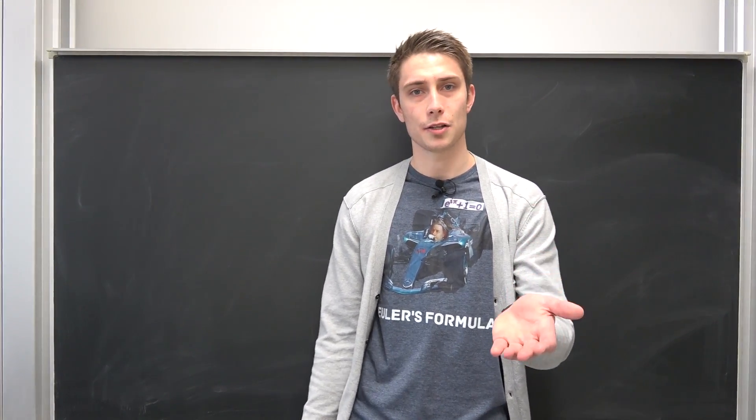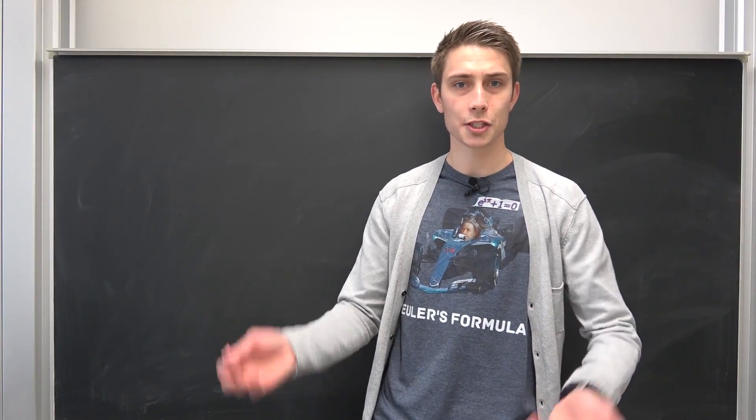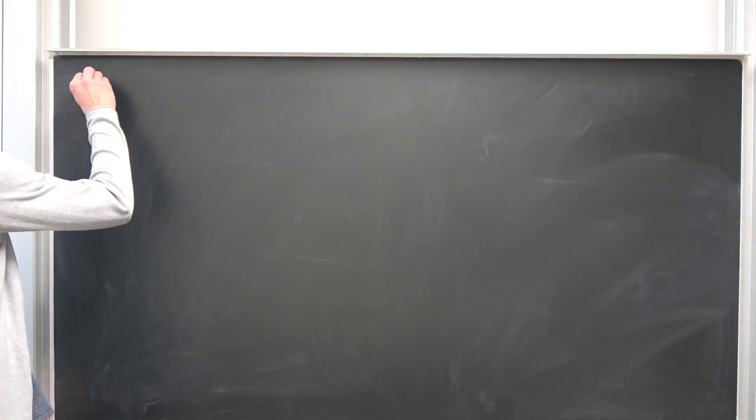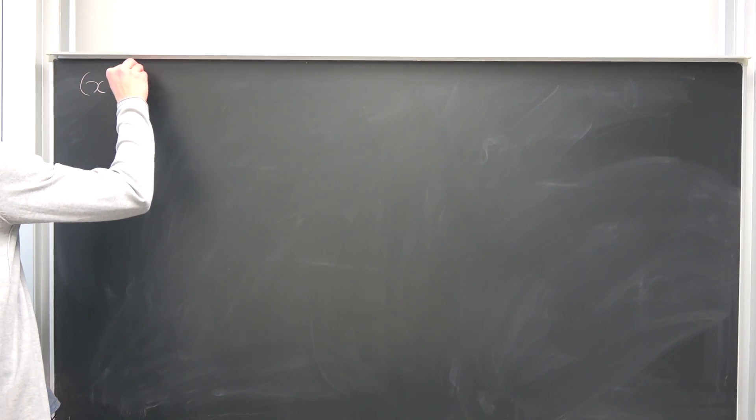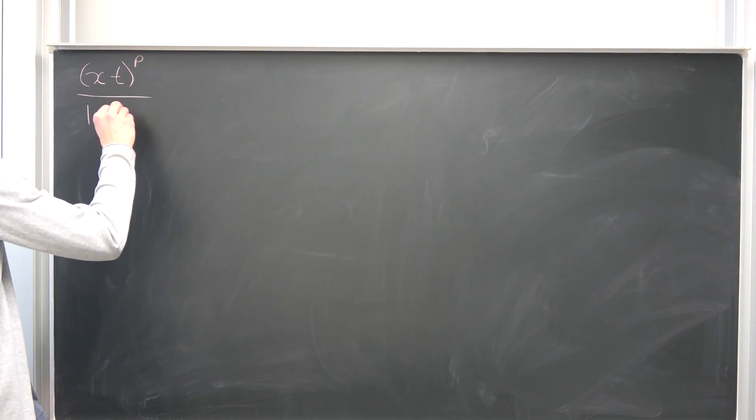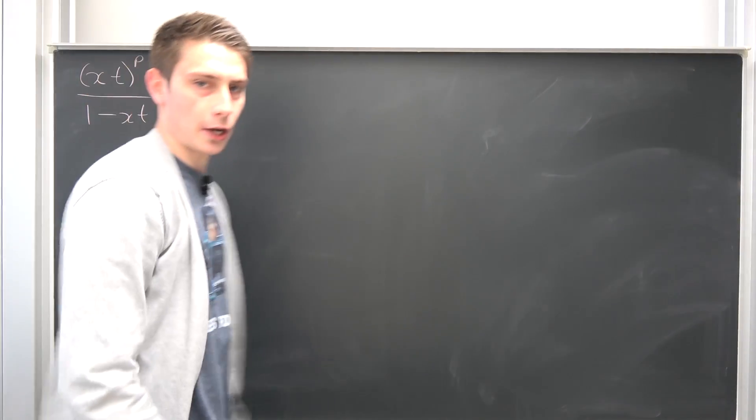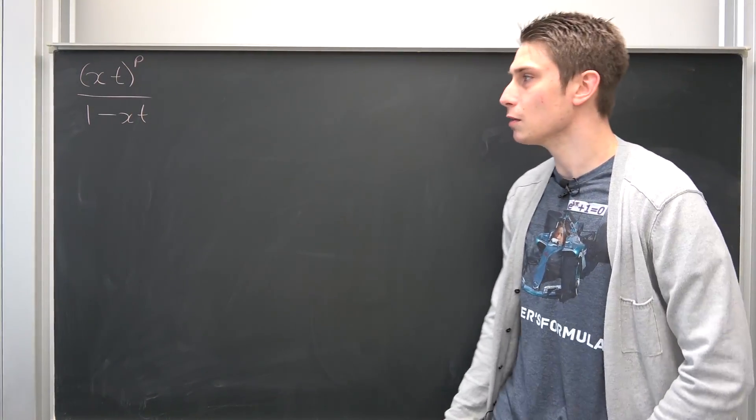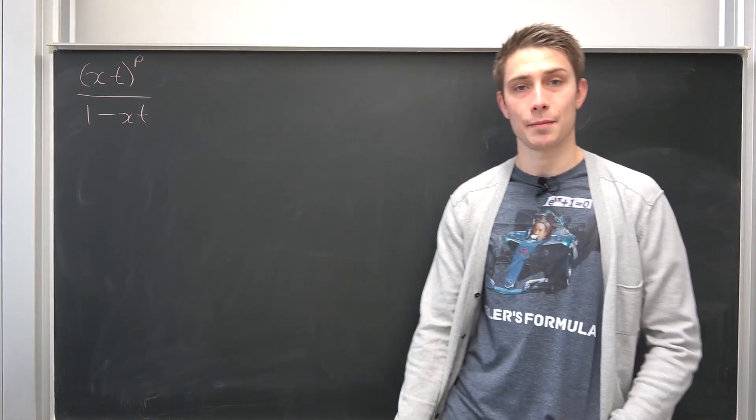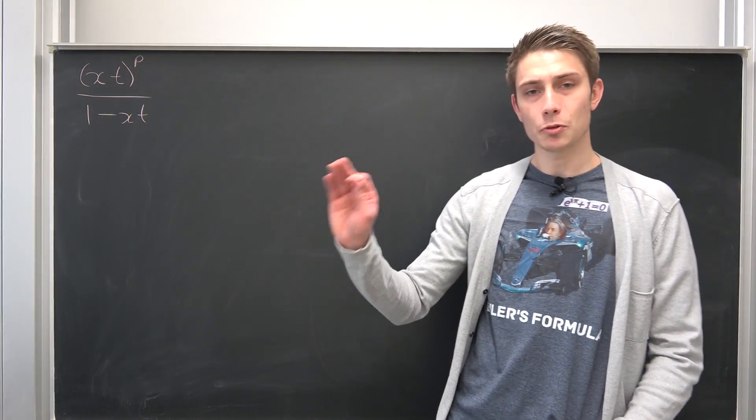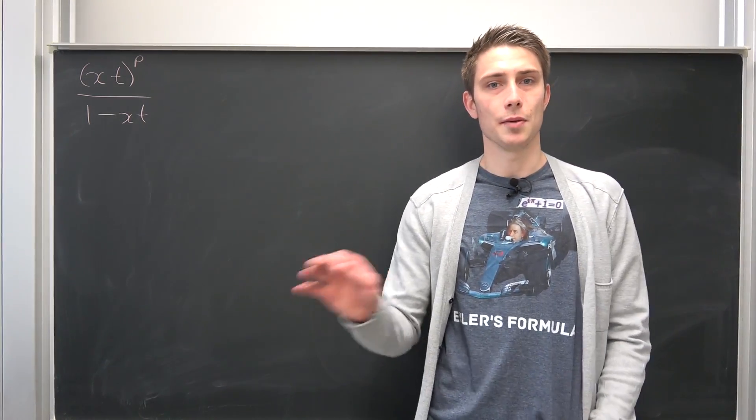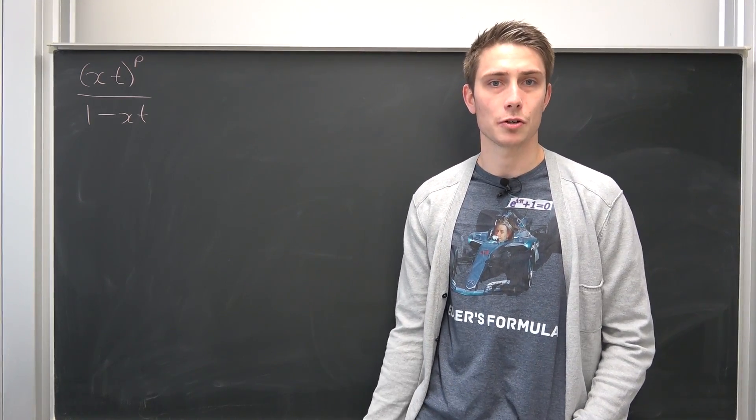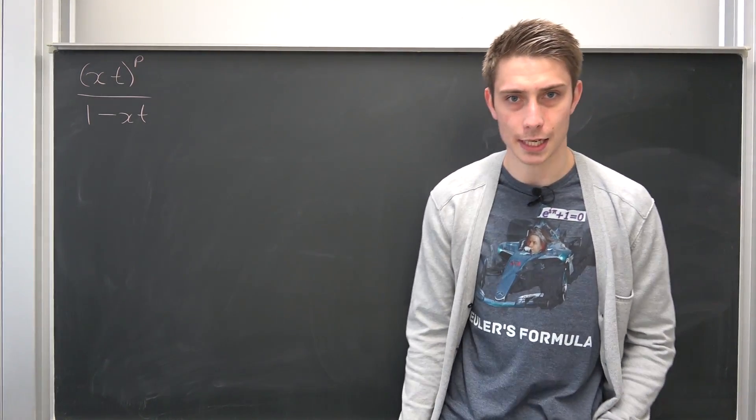First I would like to take a look at a little function with respect to two variables. Namely, I'm going to call it x times t to the pth power over 1 minus x times t. Might not seem too spectacular, looks quite funny, but here's the cool thing. I don't want to talk about Taylor series in more than one dimension. I just want to make use of the fact that we can turn stuff into the geometric series actually.